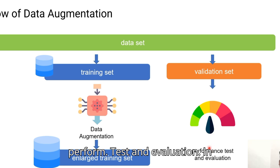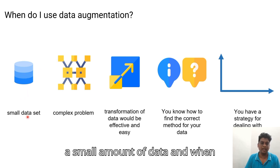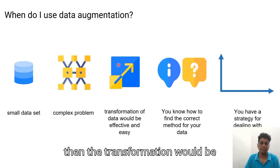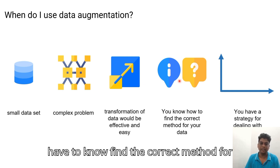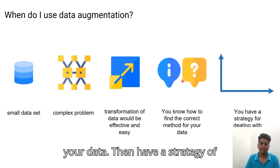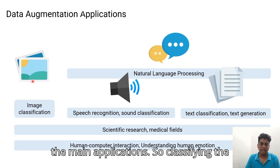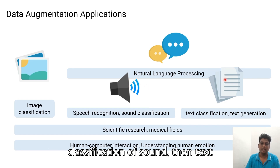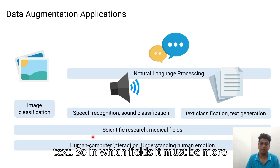Data augmentation should be used when we have only a small amount of data or a very complex problem to solve — then the transformation would be effective and easy. You need to find the correct method for your data and have a strategy for dealing with it. The main applications are image classification, speech recognition, sound classification, text generation, and text classification.